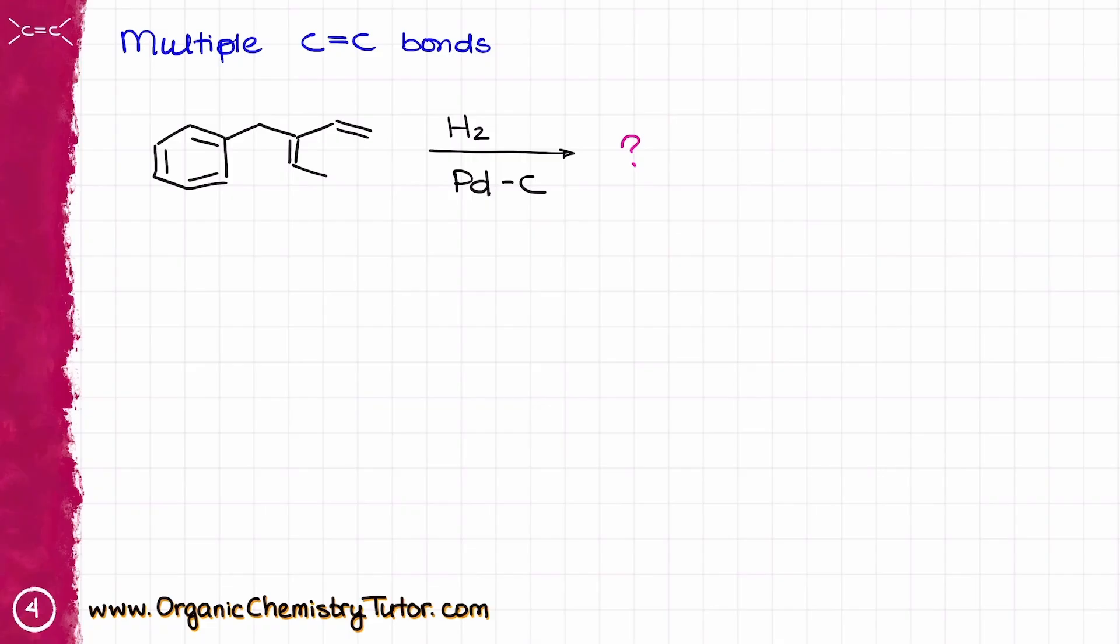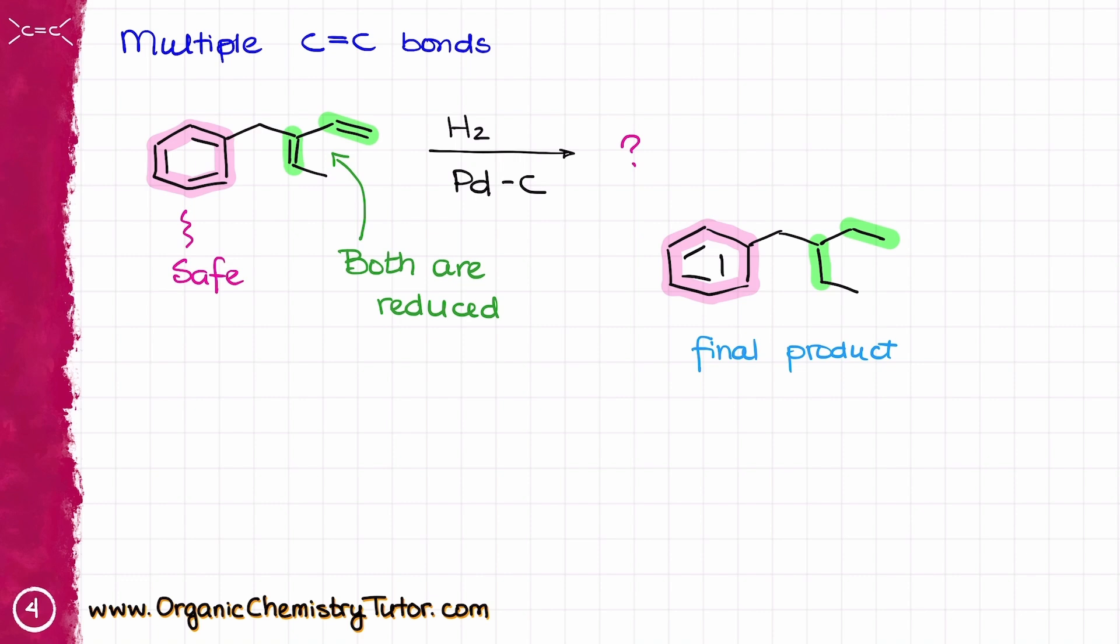Now, here is something important to keep in mind. If you have multiple double bonds in your molecule, like in this example that I have on this page, all will be reduced. The only thing that is safe is going to be the aromatic ring, which only succumbs to this reaction at extreme pressure of hydrogen and temperatures. So in this case, I'm going to get the final product where both of my double bonds have been reduced, yet my aromatic ring stays untouched.